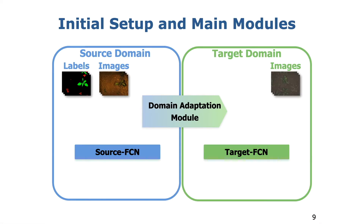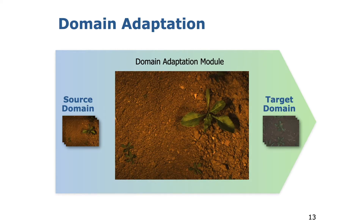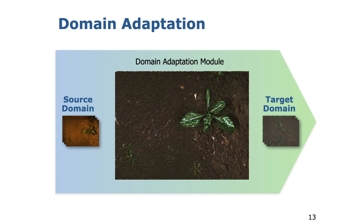We exploit unpaired image sets from a source domain and target domain, as well as labels only from the source domain. Our approach consists of two domain-specific FCNs for semantic segmentation and a domain adaptation module. Within the domain adaptation module we perform a style transfer.